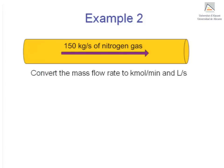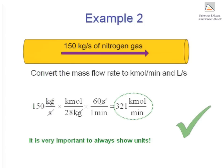Let's begin by converting the mass flow rate to molar flow rate. To do that, we make use, as before, of the molecular weight, in this case of nitrogen gas, 28 grams per mole, or equivalently 28 kilograms per kilomole. Finally, performing the calculation as shown gives us a molar flow rate of 321 kilomoles a minute.